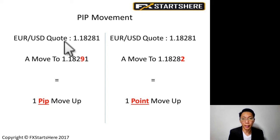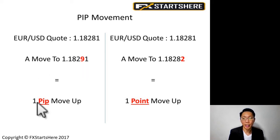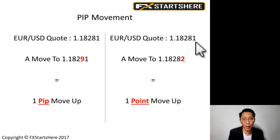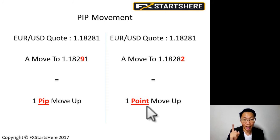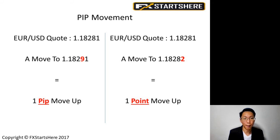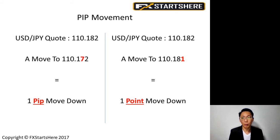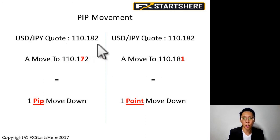Here's a simple EUR/USD example. Let's say the quote price is 1.18281 and the price moves to 1.18291 — it has moved one PIP up. If the price moves from 1.18281 to 1.18282, we say it has moved one point up. So here, one PIP is the fourth decimal change, and one point is the fifth decimal change.